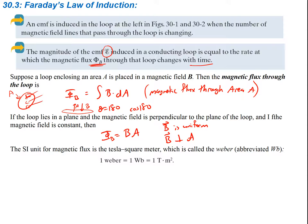The SI unit for magnetic flux is the Tesla·meter², which we call a Weber, abbreviated Wb. So one Weber equals one Tesla times meters squared.